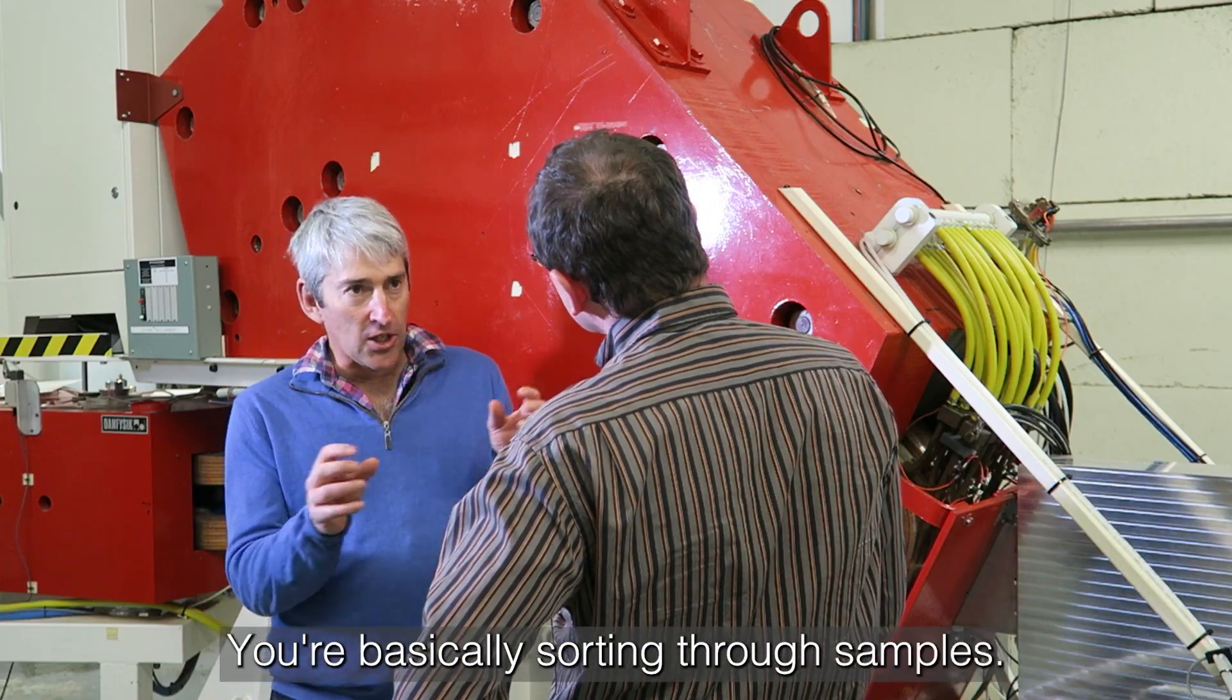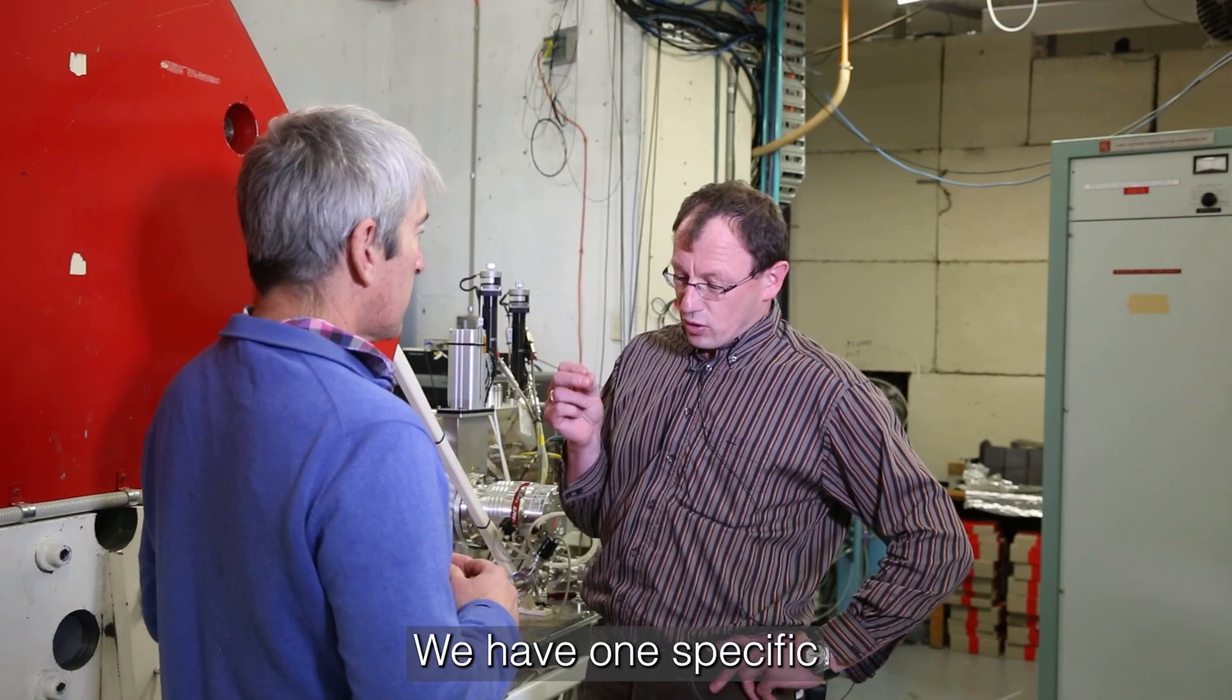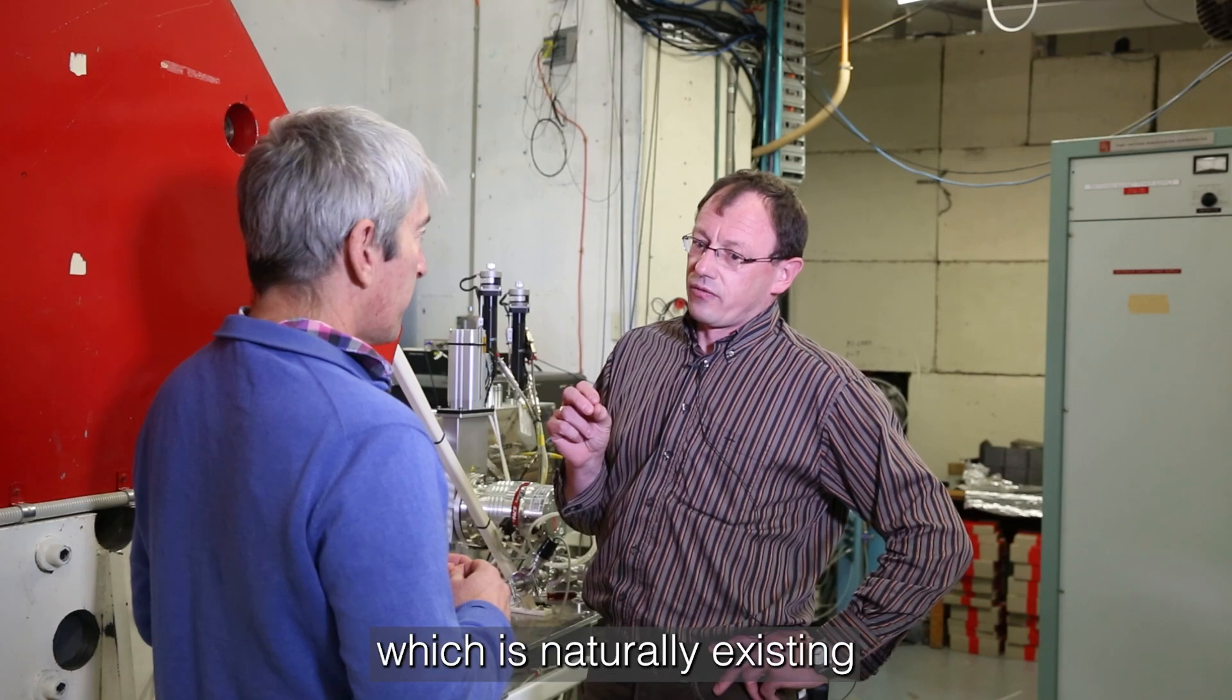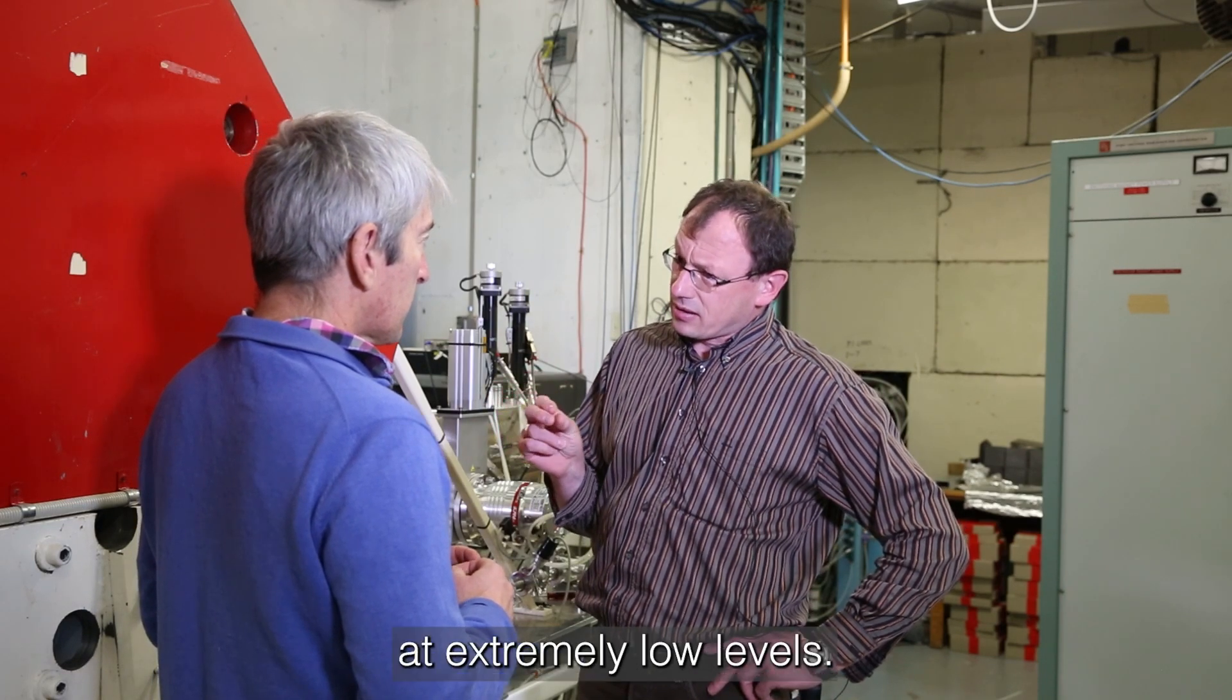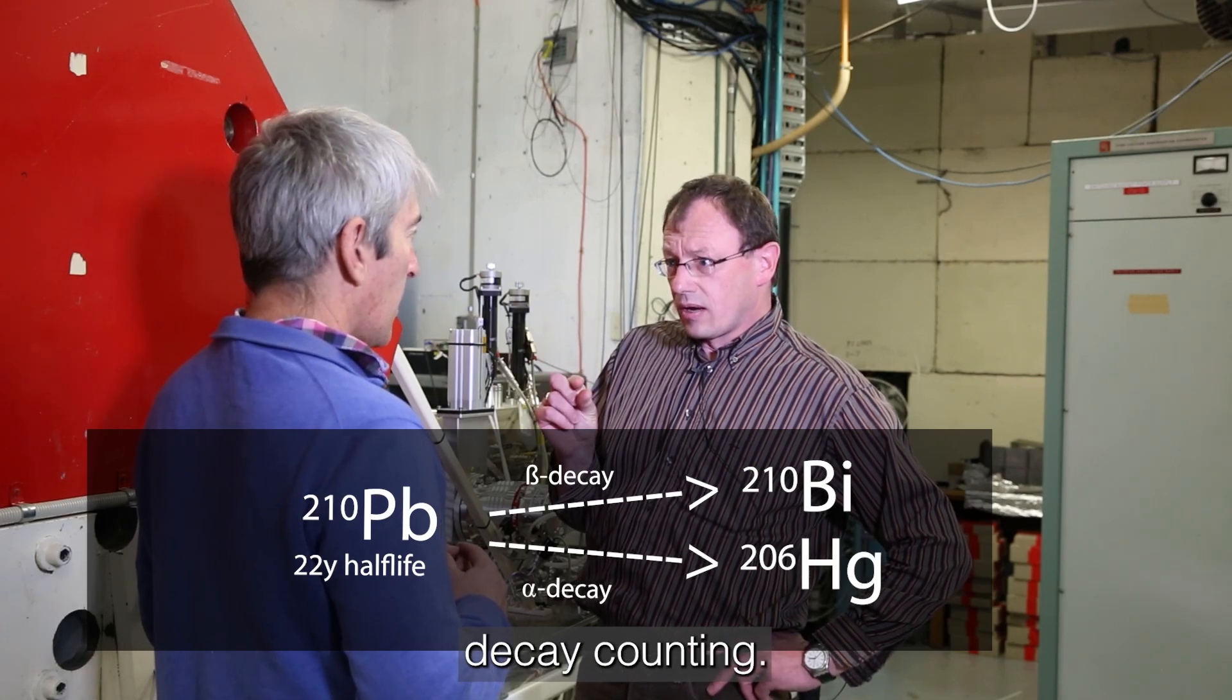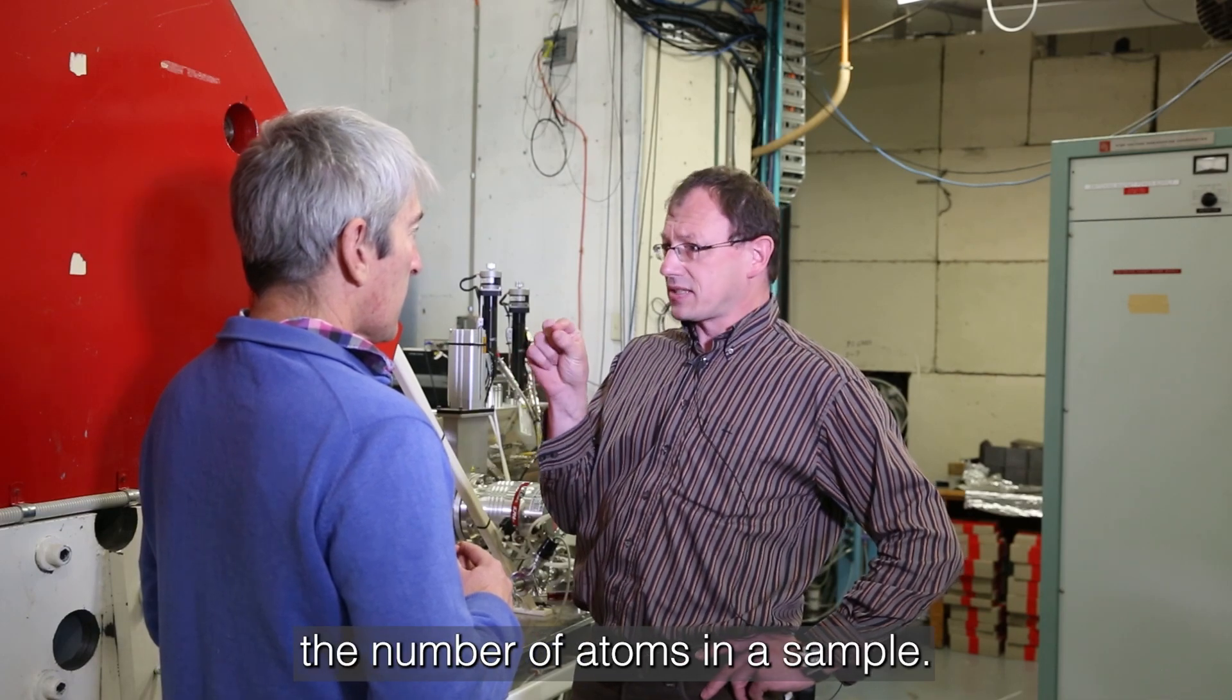So you're basically sorting through samples finding individual atoms? Exactly, we have one specific radionuclide today, this is lead-210 which is naturally existing in our environment at extremely low levels. You can measure this via decay counting but it is more sensitive to directly count the number of atoms in a sample.